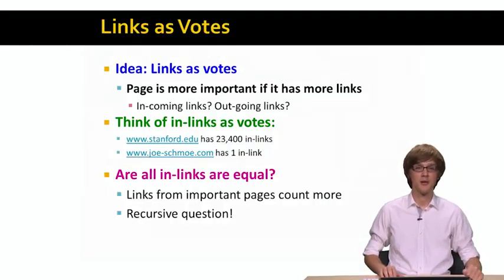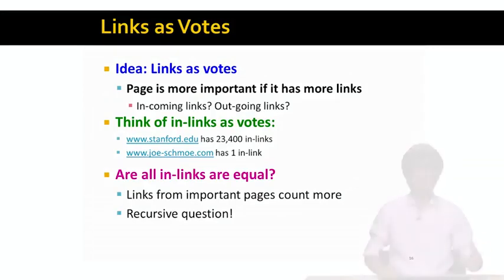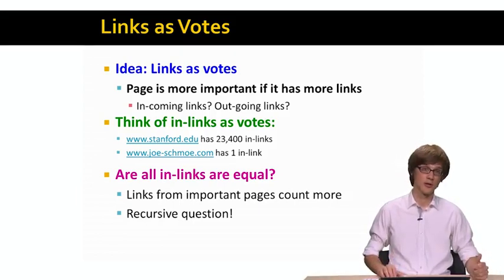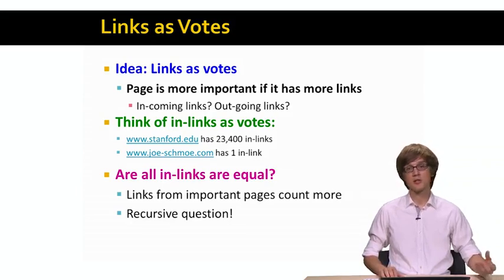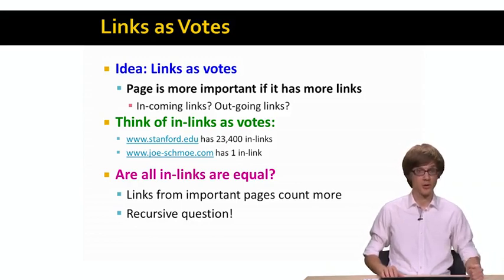The idea is that we think of links on a web graph as votes. A page or node in a graph is as important as the number of links it has. The question is: what kind of links are we talking about? We will look at in-links, because in-links are harder to fake than out-links. It's very easy to have a page with lots of out-links, but harder to have a page that lots of other pages on the web point to.